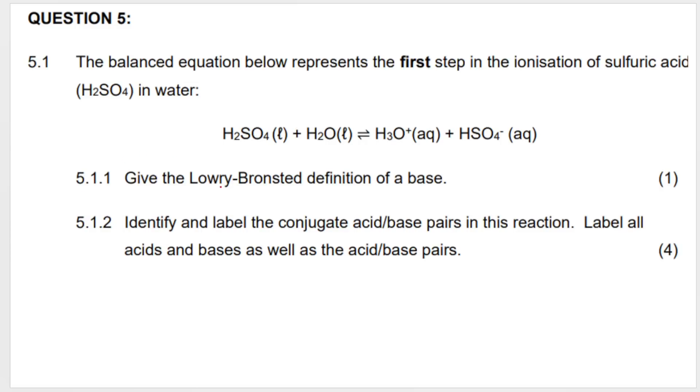My next question wants me to identify and label the conjugate acid-base pairs in this reaction. They tell me to label it as well as the pairs. So in order to do that, how I do it is you look at the equation and you pair up the different pieces. So this is sulfuric acid, and they tell you that it's ionizing in water. They also tell you that this is the first step in the ionization of sulfuric acid.